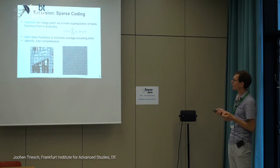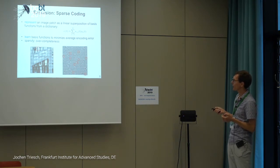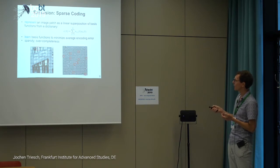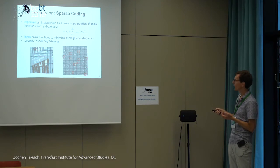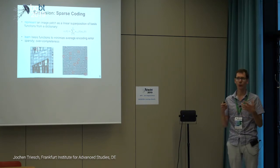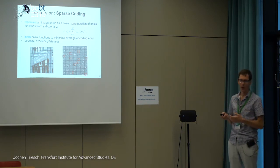Two terms play a role here: sparsity and over-completeness. Sparsity means that for any particular patch, we only want to activate a few neurons to save energy, but to still have a faithful representation, we want many neurons to choose from — many basis functions available. That's over-completeness: you have more neurons available than the input has dimensions, which may explain why you have so many more neurons in visual cortex compared to the incoming fibers from the LGN.